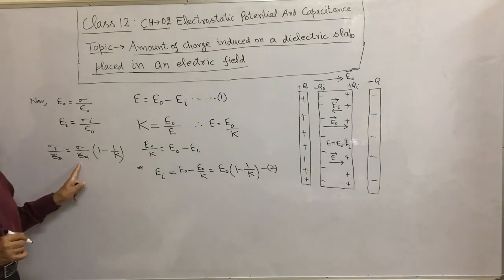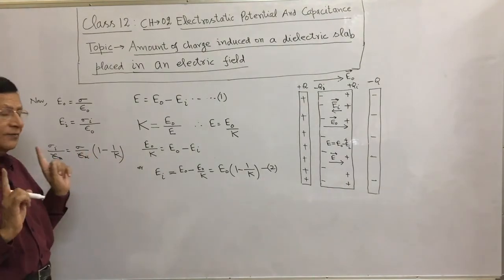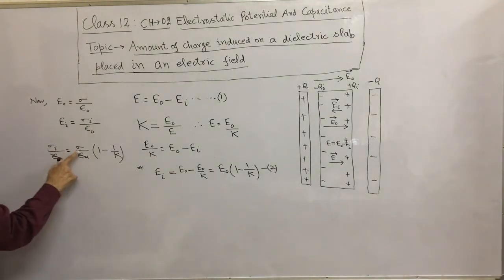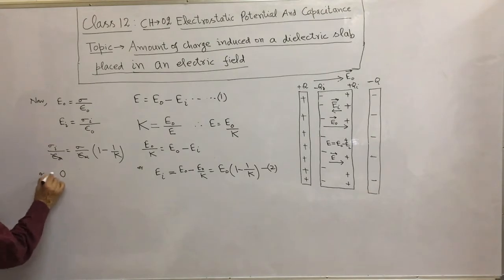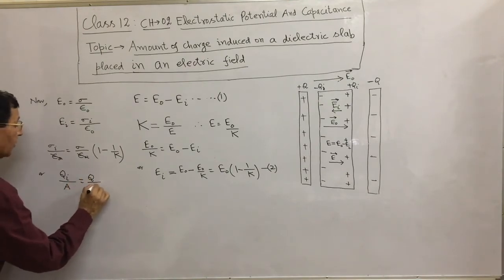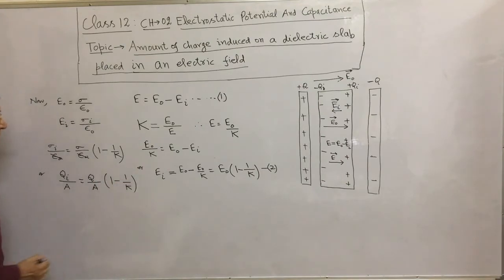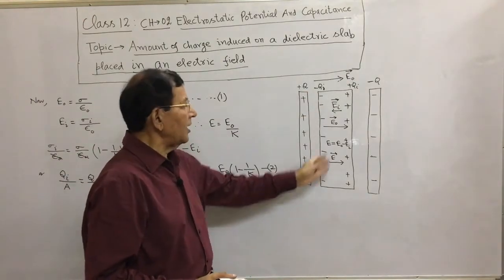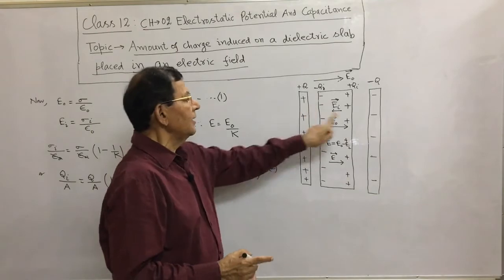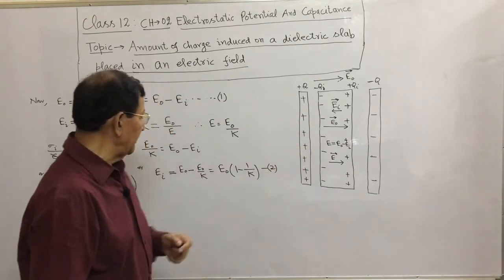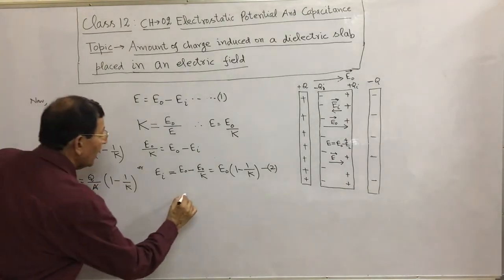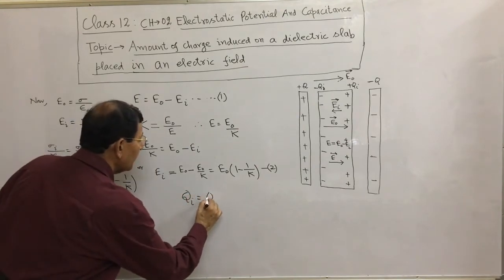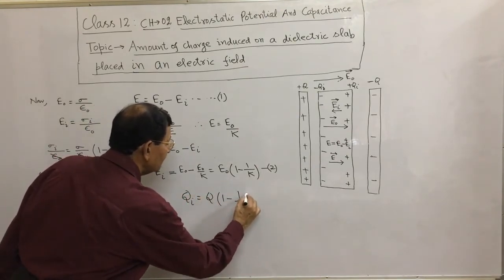Substituting these values, sigma_i over epsilon-naught equals sigma over epsilon-naught times (1 − 1/K). The epsilon-naught cancels, giving sigma_i = sigma(1 − 1/K). Since sigma = Q/A and sigma_i = Qi/A, and the area A of the dielectric face equals the area of the capacitor plates, A cancels and we are left with Qi = Q(1 − 1/K). That is the formula for the charge induced on a dielectric slab placed in an external electric field.